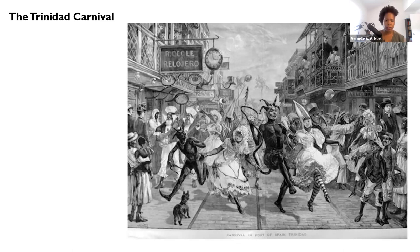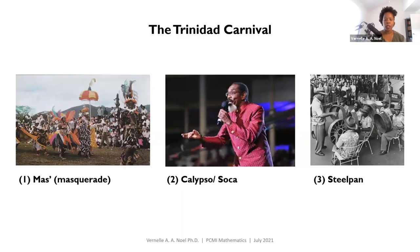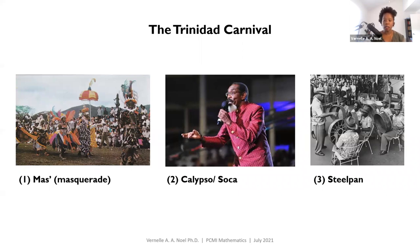While for Europeans, Carnival was about fun and frolic, for those of African descent it was religion — a form of psychological release from domination, segregation, and violent systems of control. This is an engraving from 1888 of Carnival celebrations in Port of Spain. The three defining elements of the Trinidad Carnival are: mass or masquerade (the design part), calypso or soca (music and rhythms), and the steel pan, invented in Trinidad and Tobago in the 1930s by the African working class from discarded oil drums.